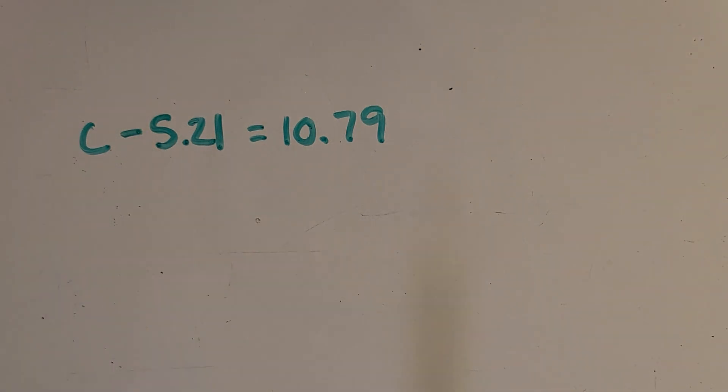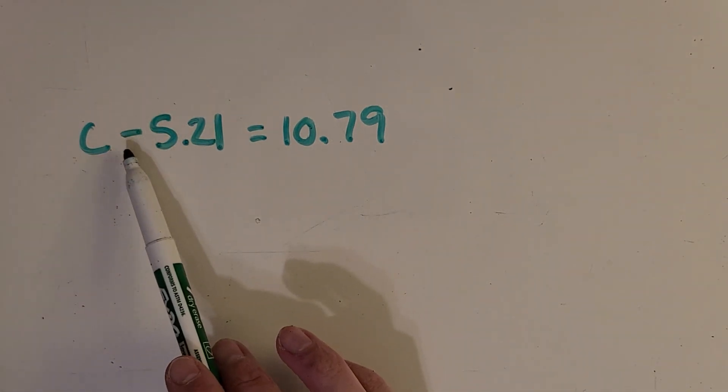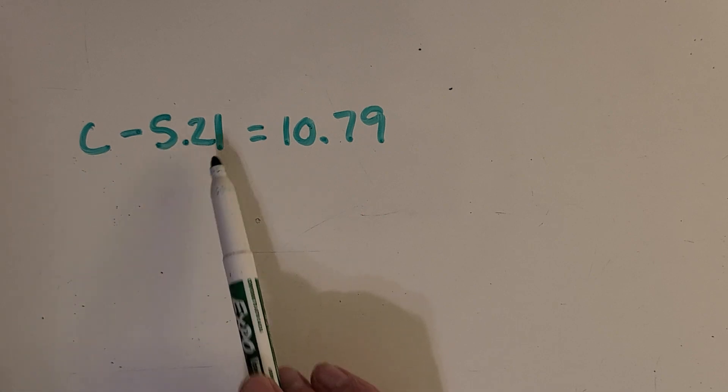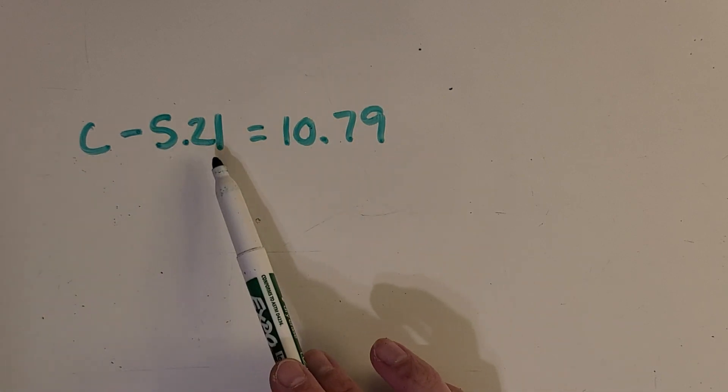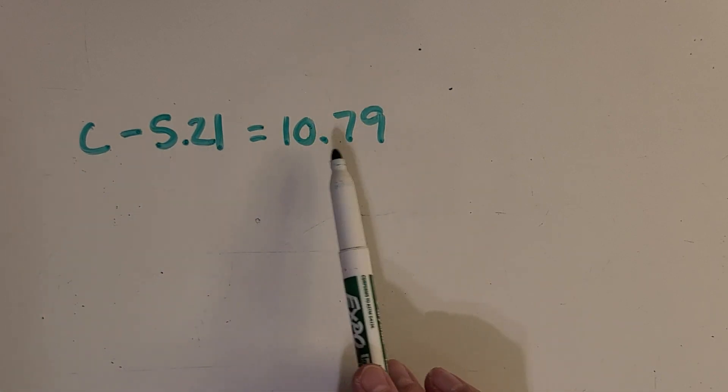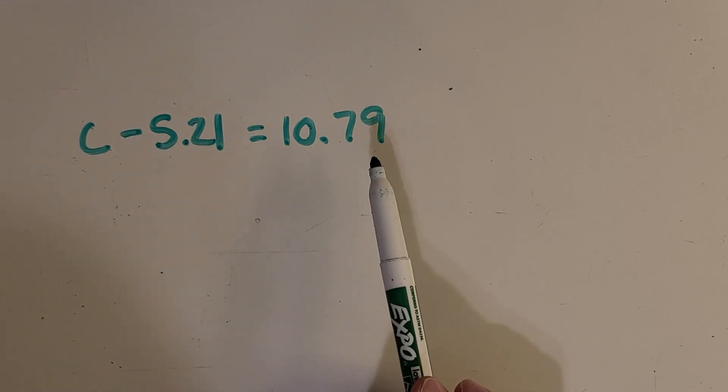Here's my next one. So, a subtraction one, we've got c minus 5.21, or 5 and 21 hundredths, equals 10 and 79 hundredths. So, now that we have some subtraction example, what's the opposite of subtraction?